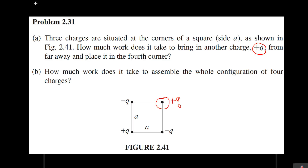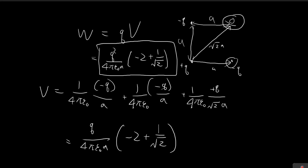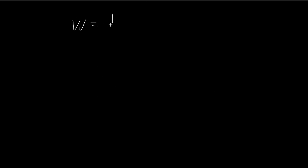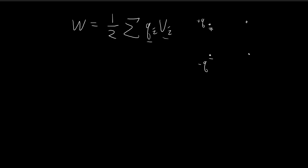For part B, we want to find the total amount of work to construct the whole configuration, now that we've placed the fourth charge. The formula David Griffiths gives us is W equals one-half times the sum of each charge times the potential at that charge's location. So we take each charge, multiply it by the potential at its point, and add them all up.